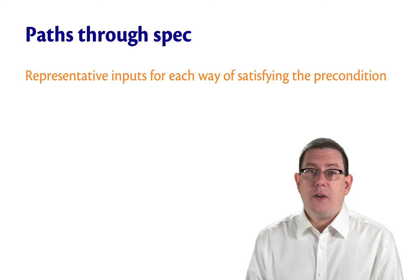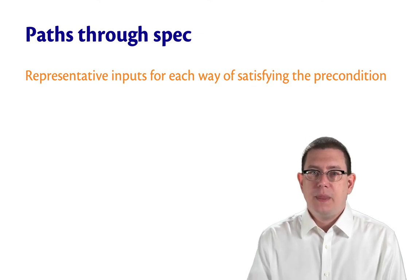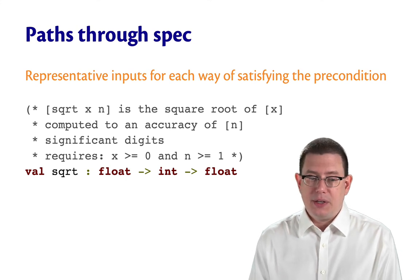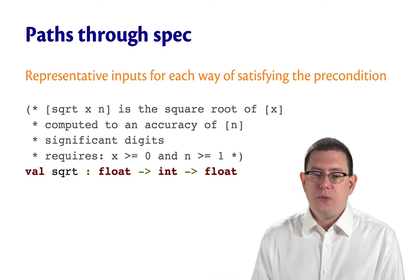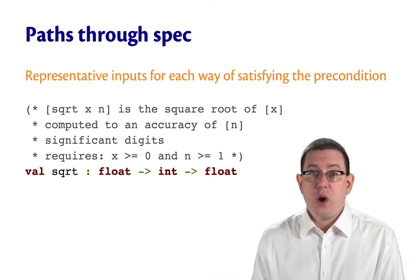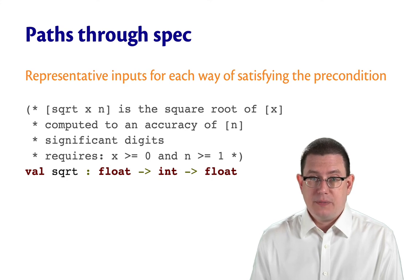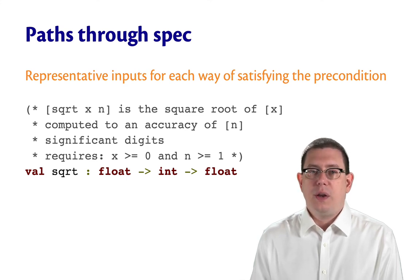Another kind of path through a specification that we can test in a black box way is all the different ways of satisfying the precondition. Now of course there might be many different inputs that satisfy a precondition. Let's look at this specification. It's for a square root function. It computes the square root of x to an accuracy of n significant digits. The precondition here is that x is greater than or equal to zero, and n is greater than or equal to one.